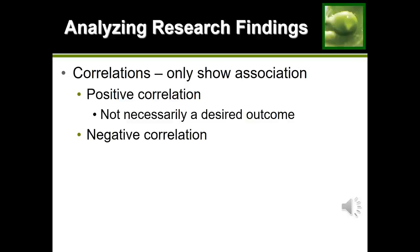Whether conducting an experiment or an observational study, the main thing we're looking for is a correlation — an association between two things. A correlation can be either positive or negative; these terms are not telling us whether the study succeeded or failed, just how the factors relate to one another. A positive correlation means the factors move in the same direction: as one increases, the other increases too, or as one decreases, the other also decreases. Examples include saturated fat intake and heart disease incidence, or amount of studying and your grade.